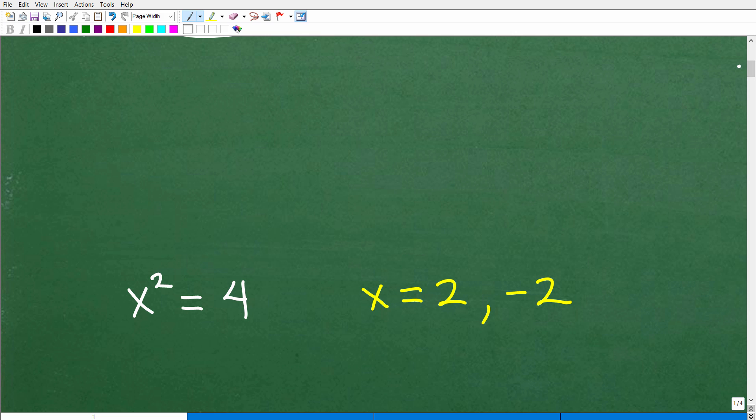Okay, so here is the answer. x squared is equal to four. x is equal to two and negative two.